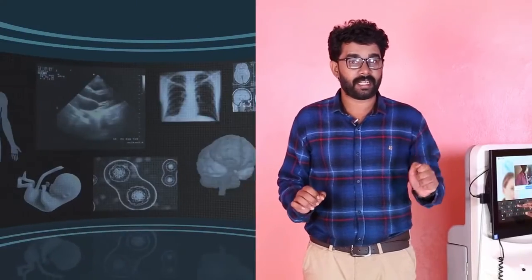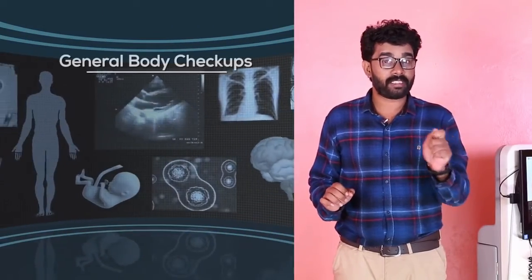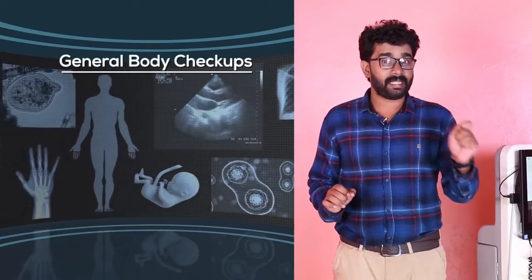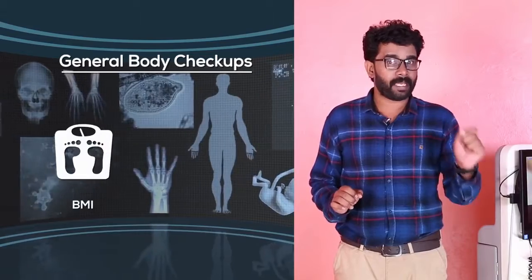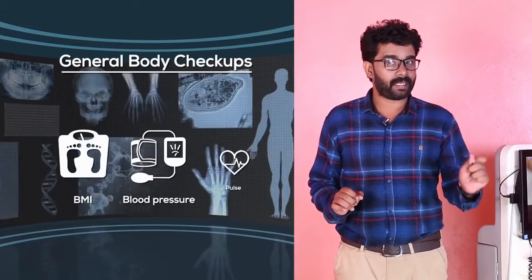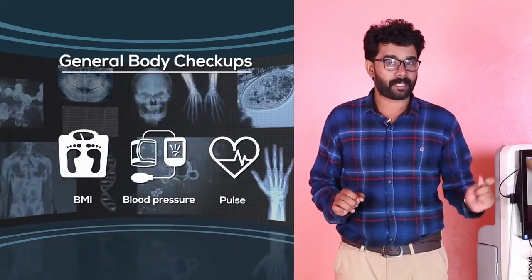There are six broad categories. The first is General Body Checkup, where you can get the report of BMI, Pulse, and Blood Pressure.